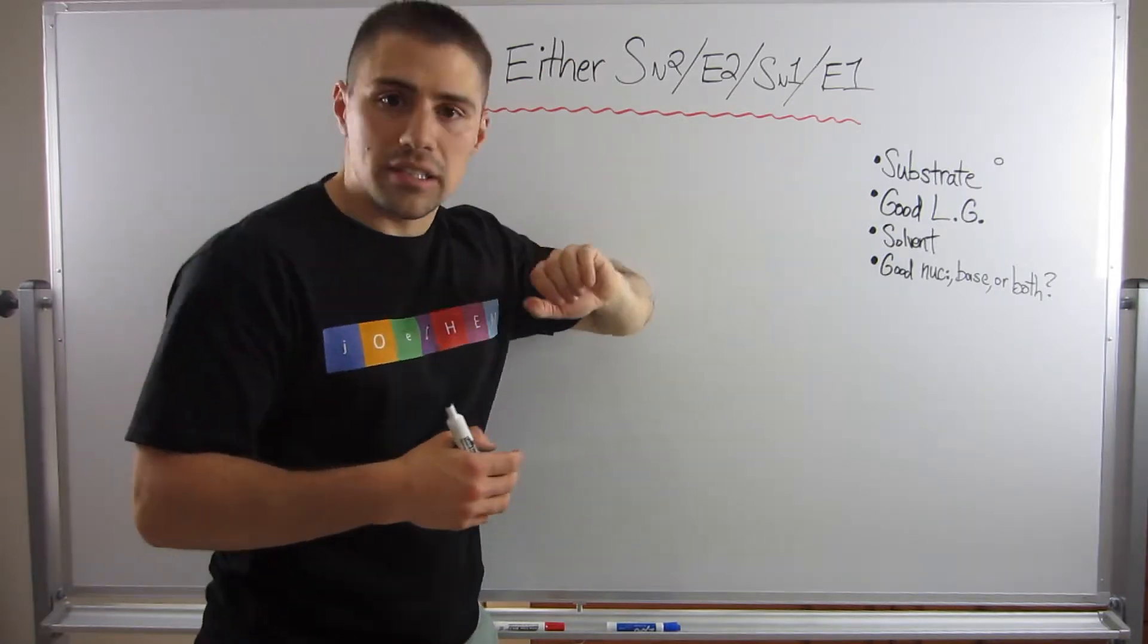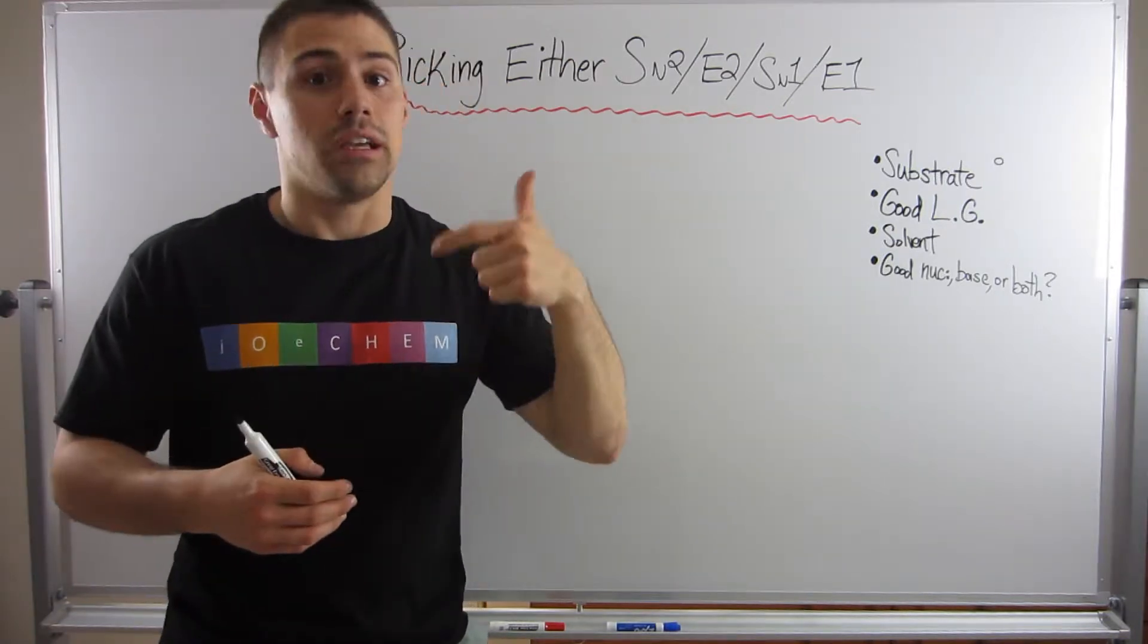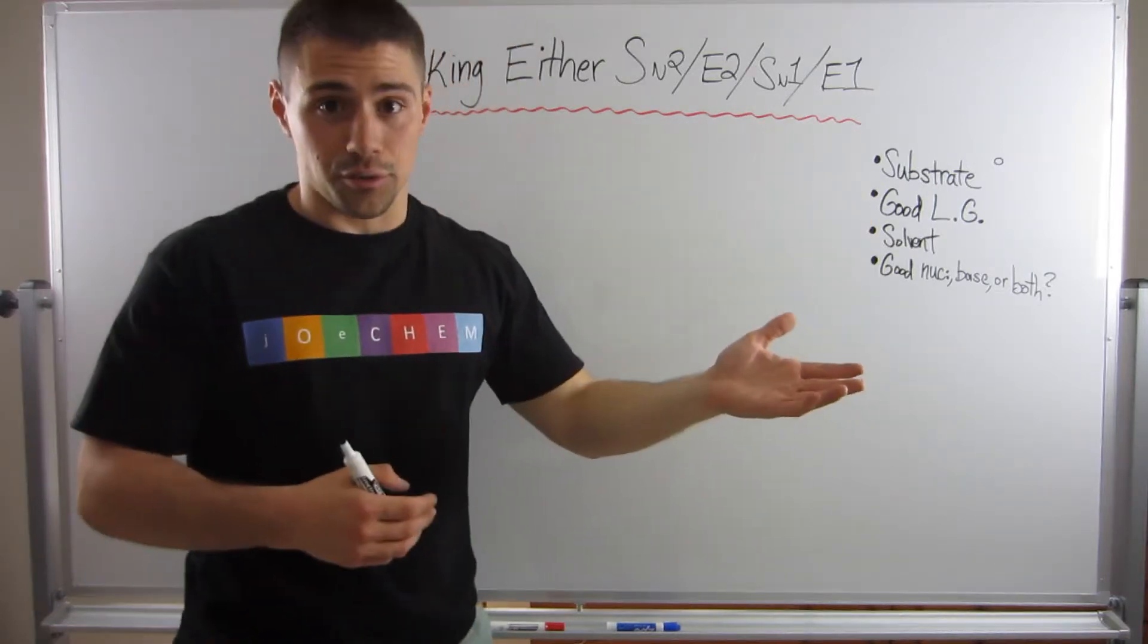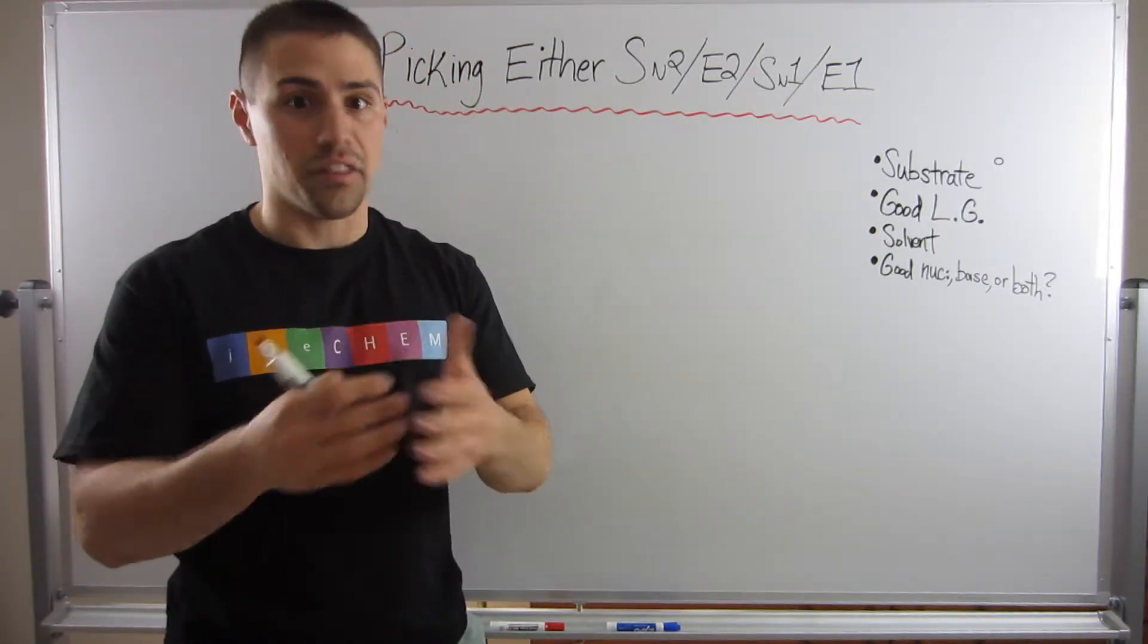We need to look for what degree substrate do we have, right? Is it methyl? Is it primary? Is it secondary? Is it tertiary? Do we have a good leaving group? We need to have that, or else nothing's going to happen.